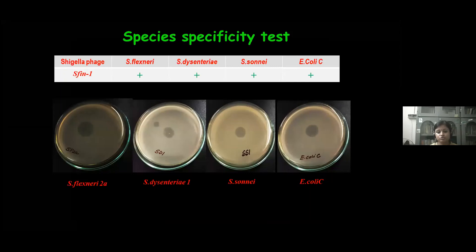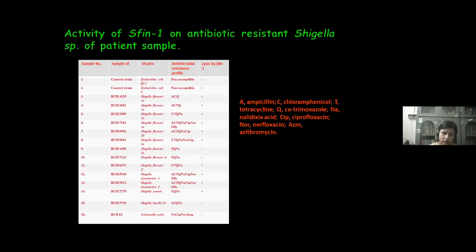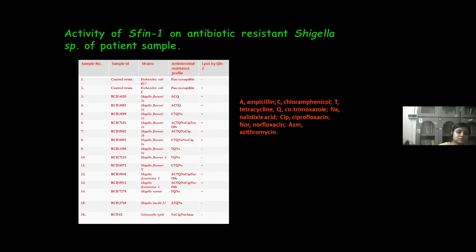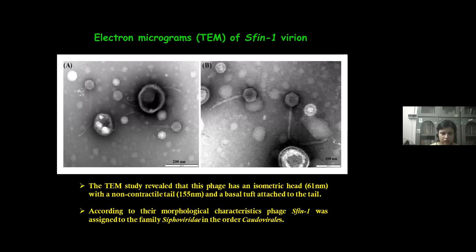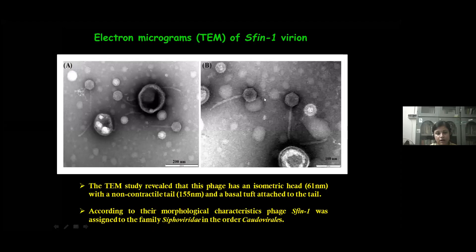We checked the activity on the Shigella species isolated from patient samples, testing whether they are sensitive or resistant against phage SF-1. We found that most of the samples are sensitive against phage SF-1, and notably these species are mostly antibiotic resistant. The electron micrographic view of phage SF-1 shows it has an isometric head and non-contractile tail, so this phage belongs to the Siphoviridae family.